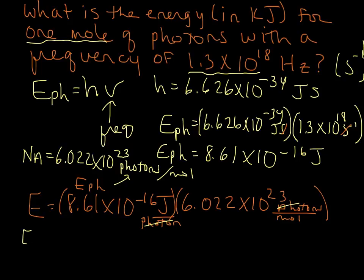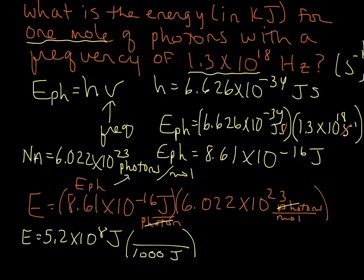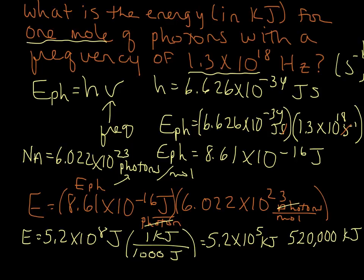We're going to end up with quite a big number. It actually comes out to 5.18 times 10 to the 8 joules, and with two significant figures that's 5.2 times 10 to the 8 joules. Converting to kilojoules — 1,000 joules per kilojoule — we end up with 5.2 times 10 to the 5th kilojoules, which is 520,000 kilojoules. That is lots of energy in that one mole of photons.